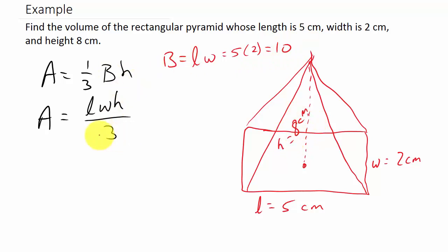Okay. So we'll go ahead and just plug it into this formula. It's the same thing. So we get area is the length, which is five, times the width, which is two, times the height, which is eight, over three.